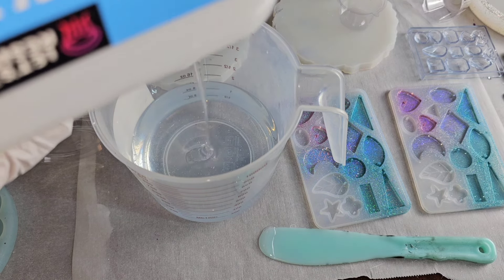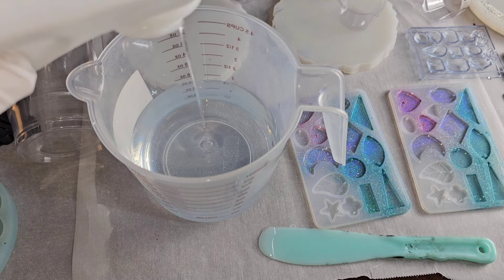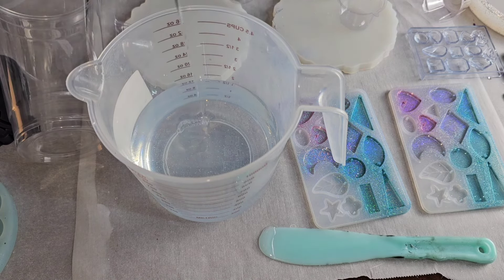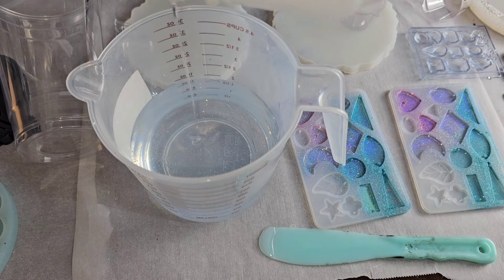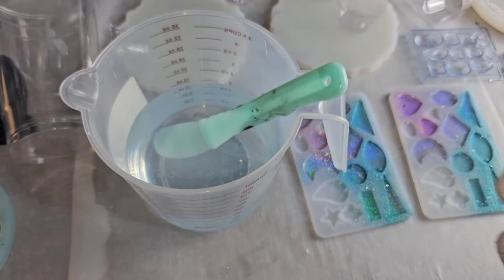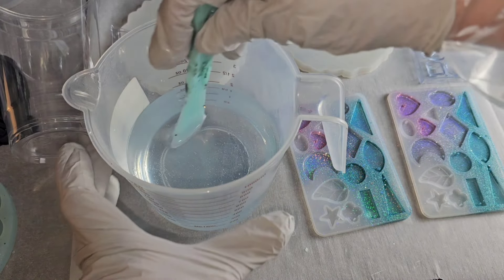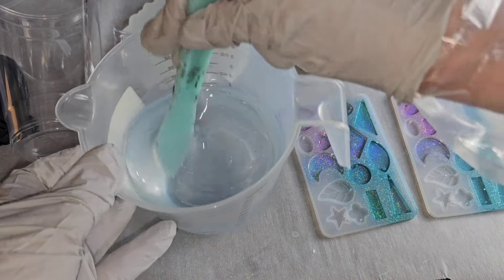If you are just going to be following this tutorial step by step, you would only need four ounces for this first layer. But whenever I do resin, I'm always working on a ton of different projects at once. So I typically always mix up 16 ounces. But if you were only going to do four ounces, you would do two ounces part A, two ounces part B.